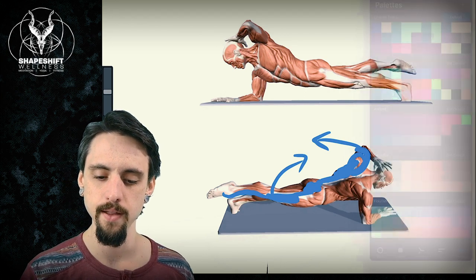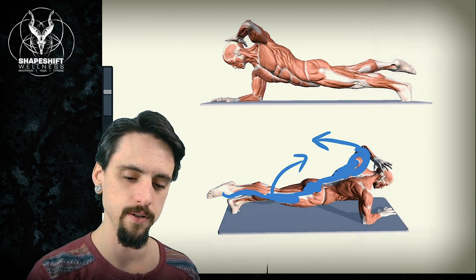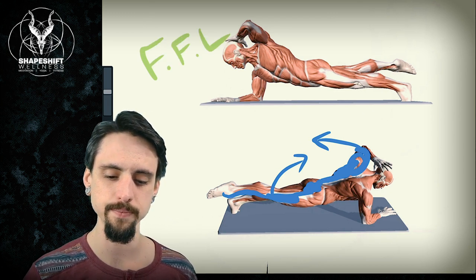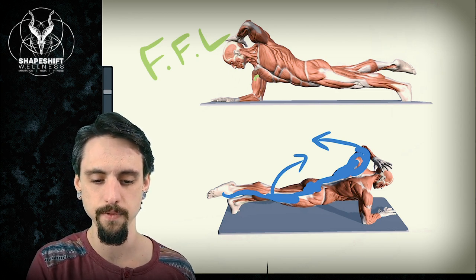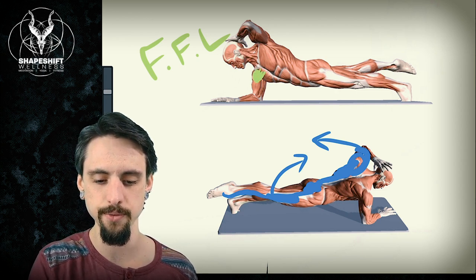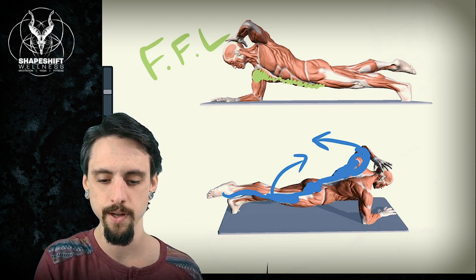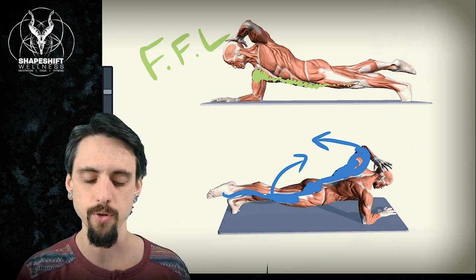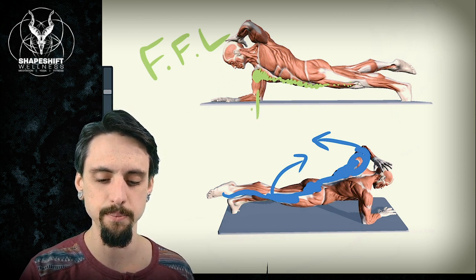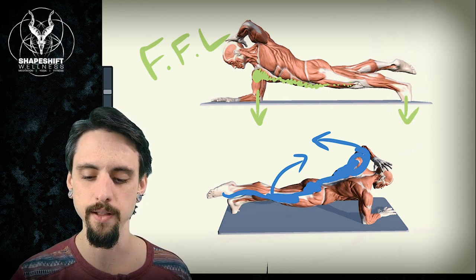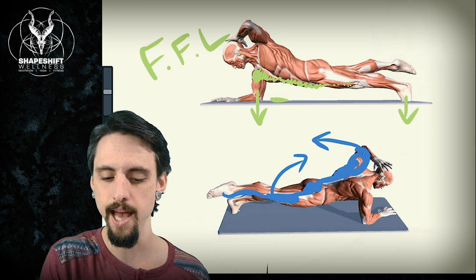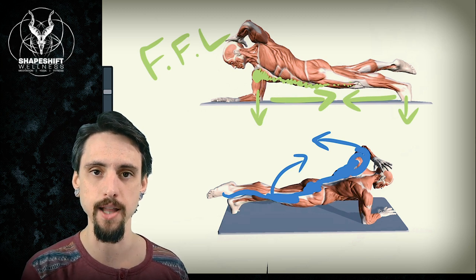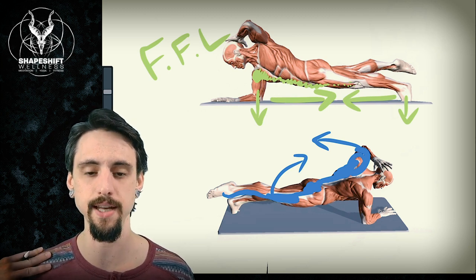And then at the same time, the front functional line—so here's the front functional line—is going to go from the right shoulder down through the pec and through the abdominal muscles and then into the adductors on the left leg. So the right shoulder then is being pushed down into the floor and then the left foot is being drawn into the floor. And the elbow and the foot are being pulled together by the front functional line from the right shoulder to the inside of the left leg.